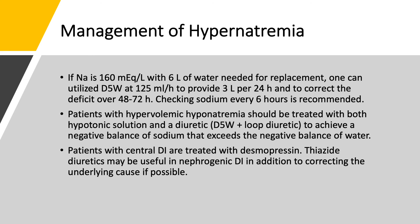For central diabetes insipidus, treatment is with desmopressin. For nephrogenic DI, treat the underlying cause: if the patient is on lithium, find an alternative; if hypokalemic, correct the potassium; if hypercalcemic, treat the high calcium; if idiopathic, consider a thiazide diuretic. This concludes the topic of hypernatremia. In the next lecture, we will present case studies in both hyponatremia and hypernatremia. See you in lecture 11.